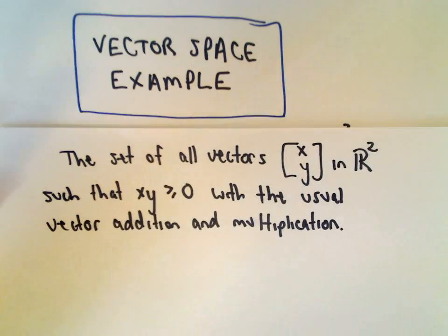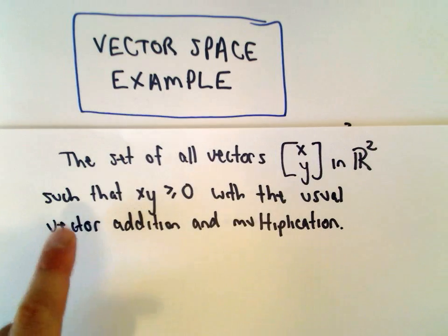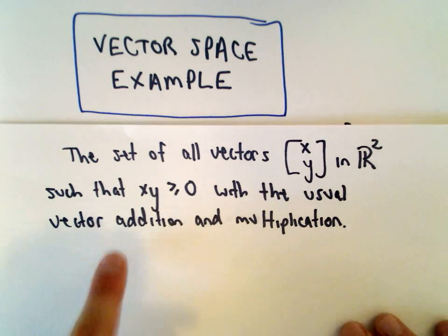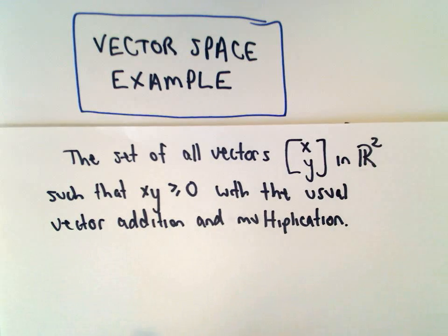Okay, so another vector space example. So here we want to determine if the set of all vectors with components x, y in R² such that x times y is greater than or equal to 0, with the usual vector addition and multiplication, is that a vector space or not?